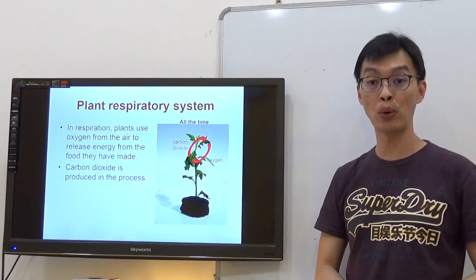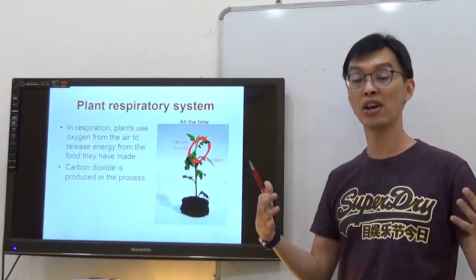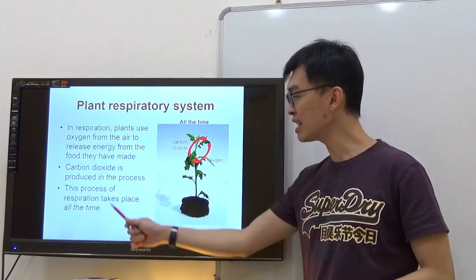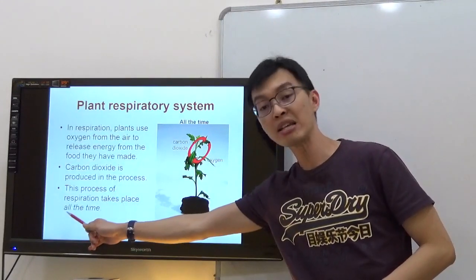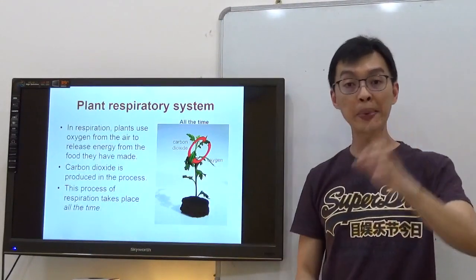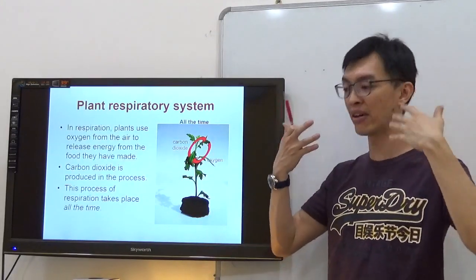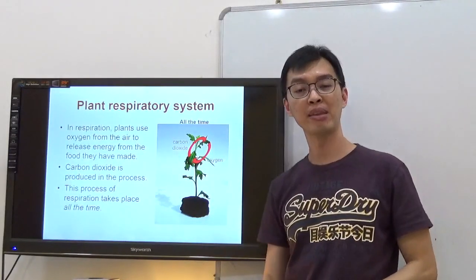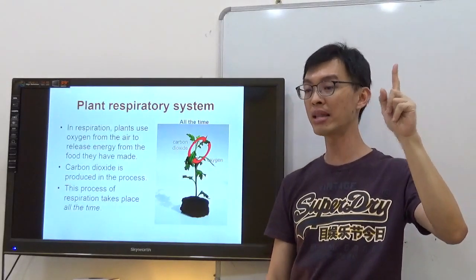Carbon dioxide is produced in the process. So they give out carbon dioxide once they have produced the energy. This process of respiration takes place all the time. Take note, the key word is all the time. Plants are like us, all the time taking in oxygen, giving up carbon dioxide. Now, but they have done something else during the day when there is light.